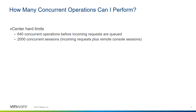In vCenter, there are two hard limits. The first is that you can issue approximately 600 concurrent tasks to vCenter before it will start queuing up subsequent tasks. So if you try to send 700, about 600 will be executed and the rest will be queued up. In addition, vCenter has a hard-coded limit of 2,000 concurrent sessions — those are 2,000 logins — after which any subsequent login attempts will fail.